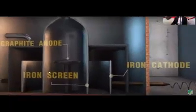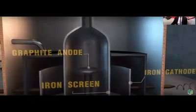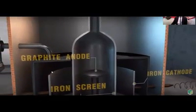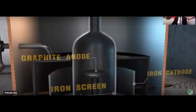Now let's talk about the components. In an electrochemical cell, there is one anode and one cathode. In this case, graphite acts as the anode and iron acts as the cathode. In the center, there is a separation called an iron screen. This iron screen separates the anode compartment from the cathode compartment.